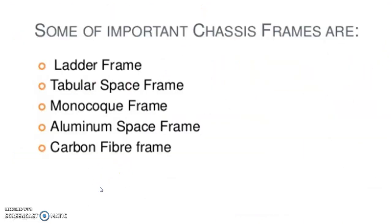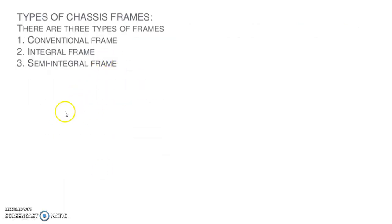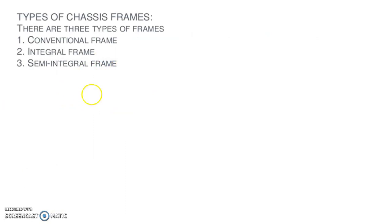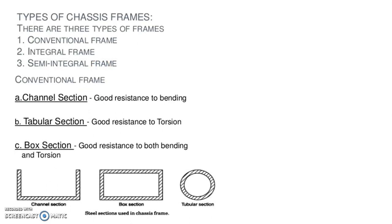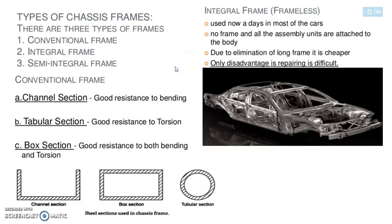Some of the important chassis frames are: ladder frame, tubular space frame, monocoque frame, aluminum space frame, and carbon fiber frame. Types of frames are also classified as conventional frame, integral frame and semi-integral frame. The conventional frame uses channel section, tubular section and box section. The integral frame, used nowadays in most cars, is also called frameless or chassisless — all assembly units are attached to the body. Due to elimination of the long frame it is lighter, but repairing is very difficult.